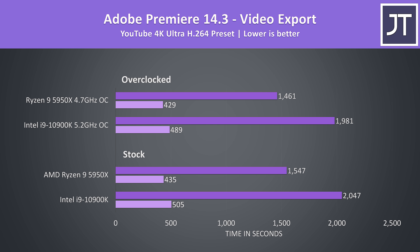Adobe Premiere was used to export one of my laptop review videos at 4K. I've used VBR 1 pass which should take advantage of QuickSync, and VBR 2 pass which doesn't use hardware acceleration. Despite QuickSync, the 5950X was 16% faster in the 1 pass test at stock, but a much larger 32% faster in the 2 pass test, as they're on more even footing without hardware acceleration.